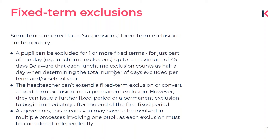One thing you should know is that you can't technically extend a fixed-term exclusion. You can't take a three-day exclusion and extend it to a seven-day exclusion. You actually have to take multiple actions — either have multiple fixed-term exclusions that follow each other, or a permanent exclusion that immediately follows a fixed-term exclusion. As governors, you could be involved in multiple reviews related to what looks like one single exclusion, simply because multiple exclusions went into place.